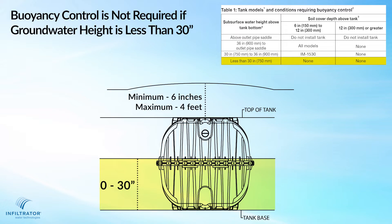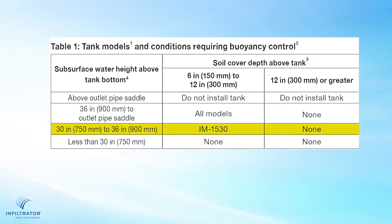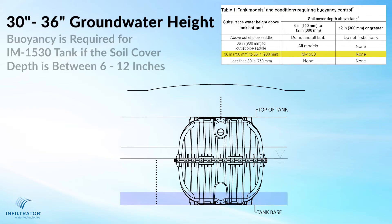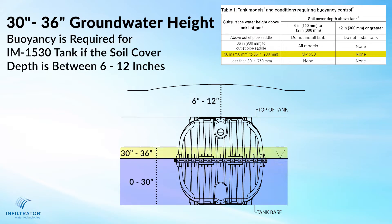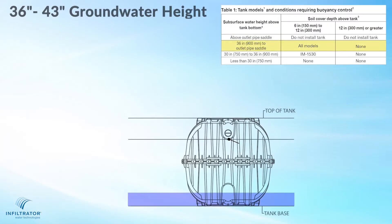When the uninterrupted saturated soil conditions are between 30 inches and 36 inches, buoyancy control is only required for the IM-1530 tank when the soil cover depth is between 6 and 12 inches; otherwise no buoyancy control is required. If the uninterrupted saturated soil conditions are between 36 inches and 43 inches, or the outlet pipe saddle location, buoyancy control is required for all tank models if the soil cover depth is between 6 inches and 12 inches.